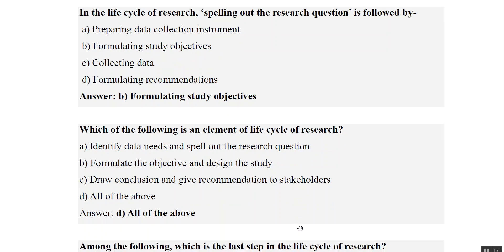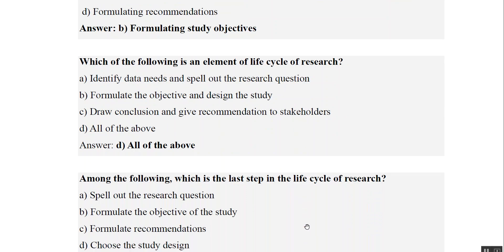Among the following, which is the last step in the life cycle of research? The actual last step is to inform the stakeholders, but from the given options — spell out the research question, formulate the objective, formulate the recommendation, and choose the study design — we rearrange them: spell out the research question, then formulate the objective, then choose the study design, and finally formulate the recommendation. So the last step among these options is formulate the recommendation.